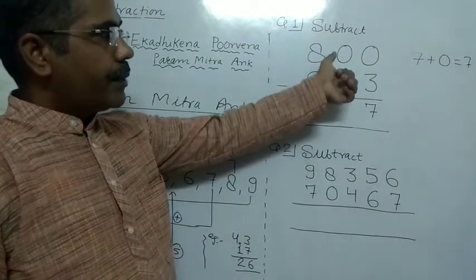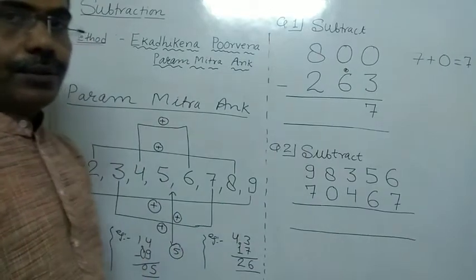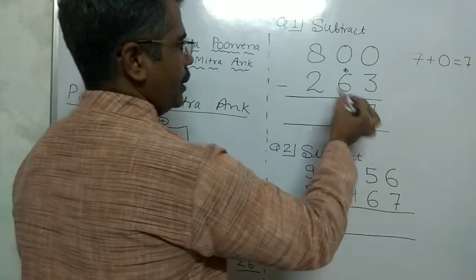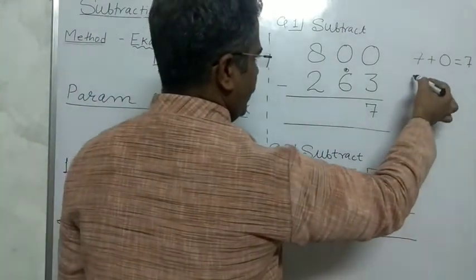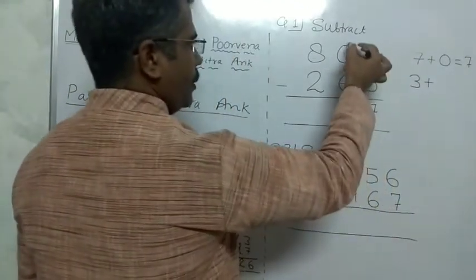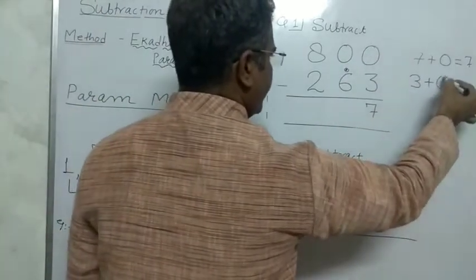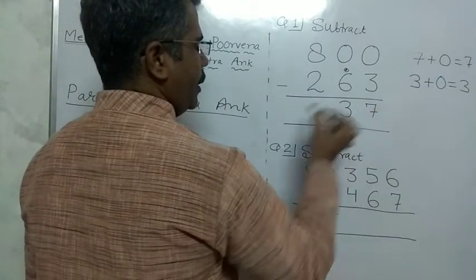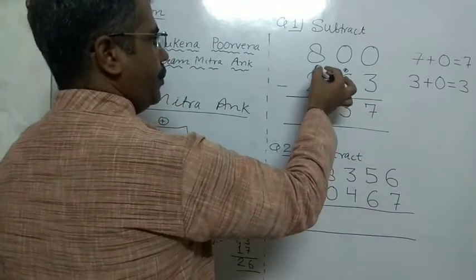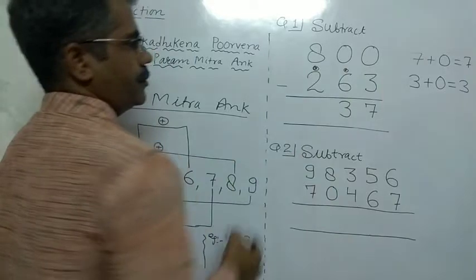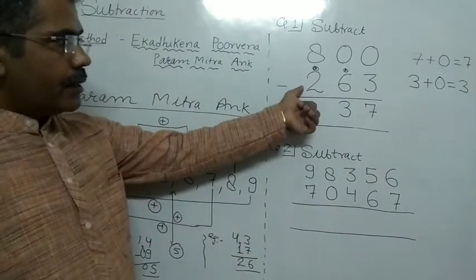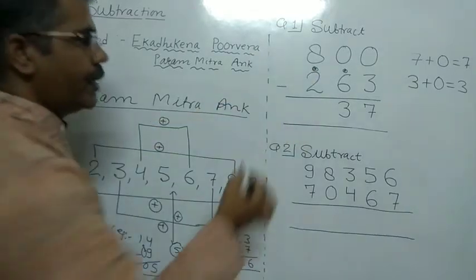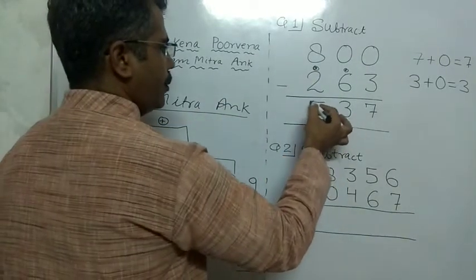Again, 7 cannot be subtracted from 0. So Pramikkar Ankh of 7 is 3. Upper digit is 0, so we get 3. We write 3 here, and use Ekatecane Purvend. This digit becomes 3, and 3 subtracted from 8, we get 5.